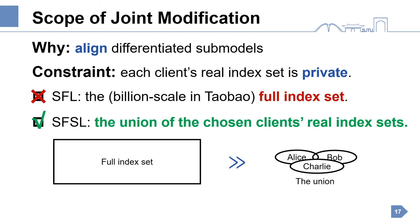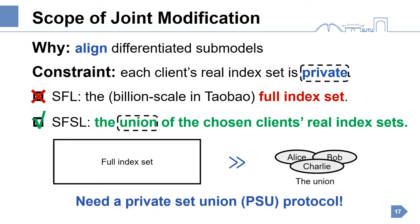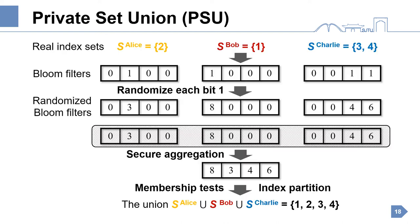Now, a new question is how each chosen client can obtain the union without revealing any individual client's real index set. In other words, we need a private set union protocol. Considering previous schemes can only satisfy the centralized setting and lack high scalability, we propose a new private set union protocol using bloom filter, secure aggregation, randomization, and partition.